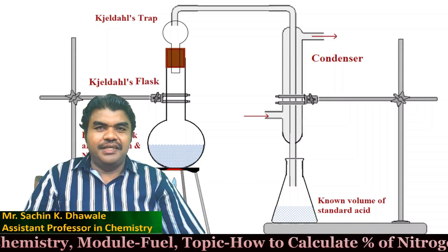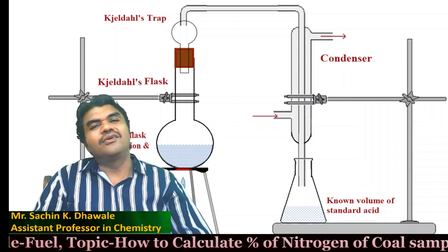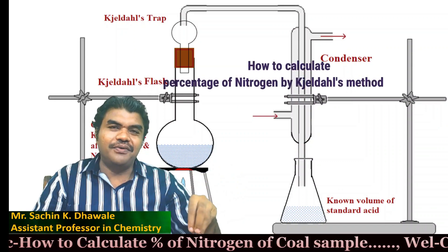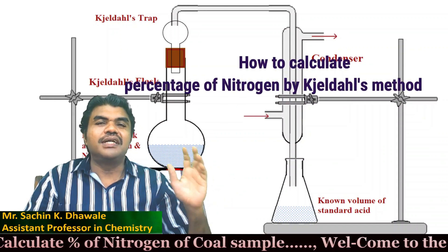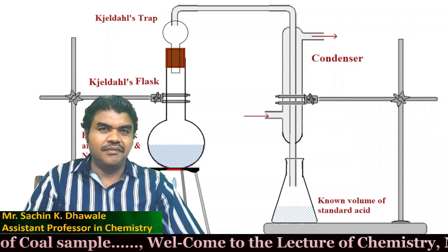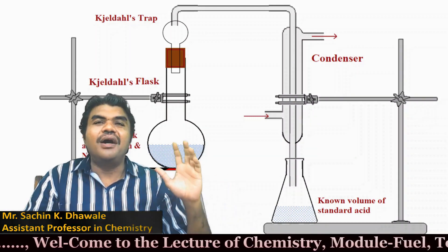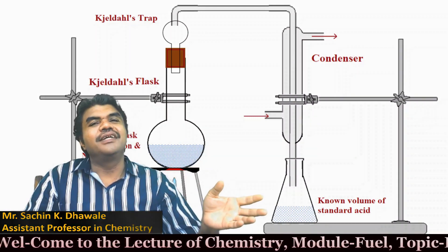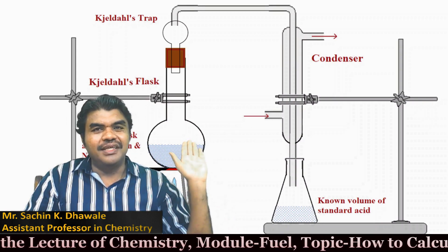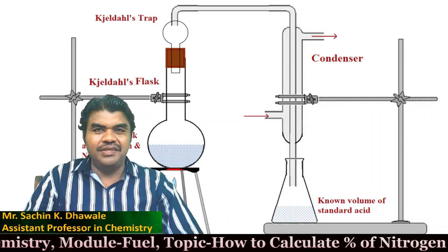Welcome, dear students. In today's Chemistry lecture, module 12, the topic of discussion is how to calculate the percentage of nitrogen from a coal sample by using Zelda's method. Some examples are taken, and by solving those numericals, we can understand how to calculate the percentage of nitrogen present in a coal sample. Let us go to the first numerical.